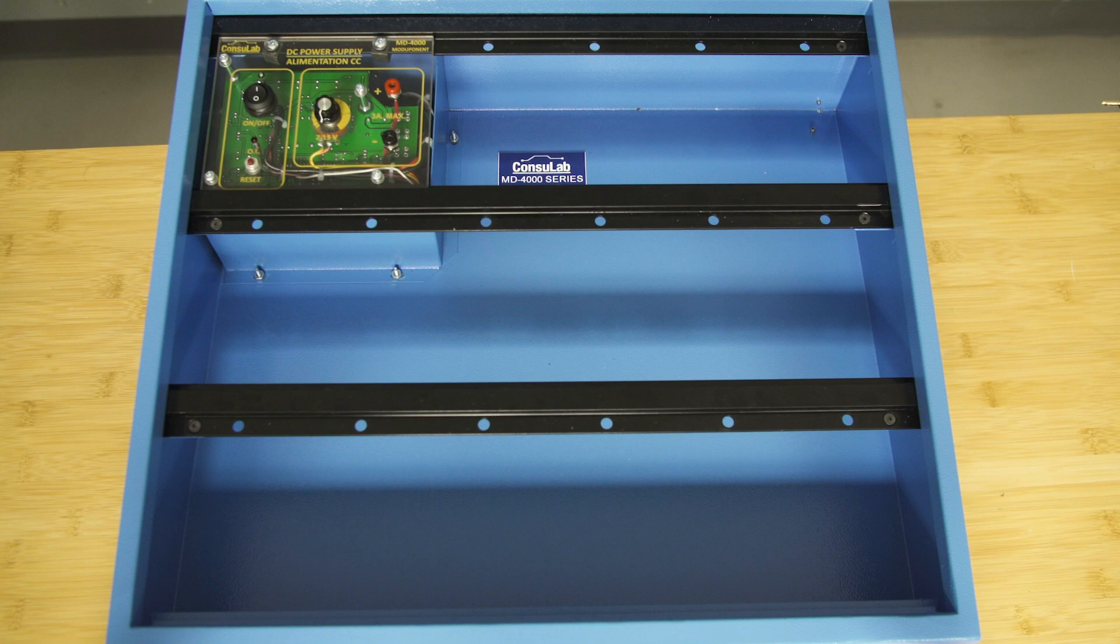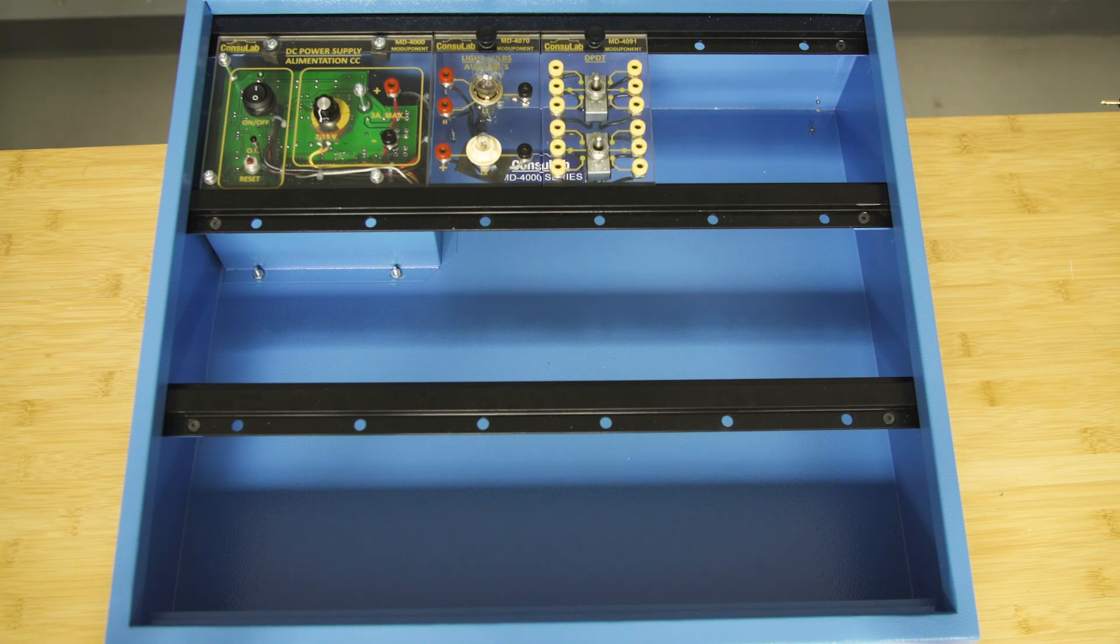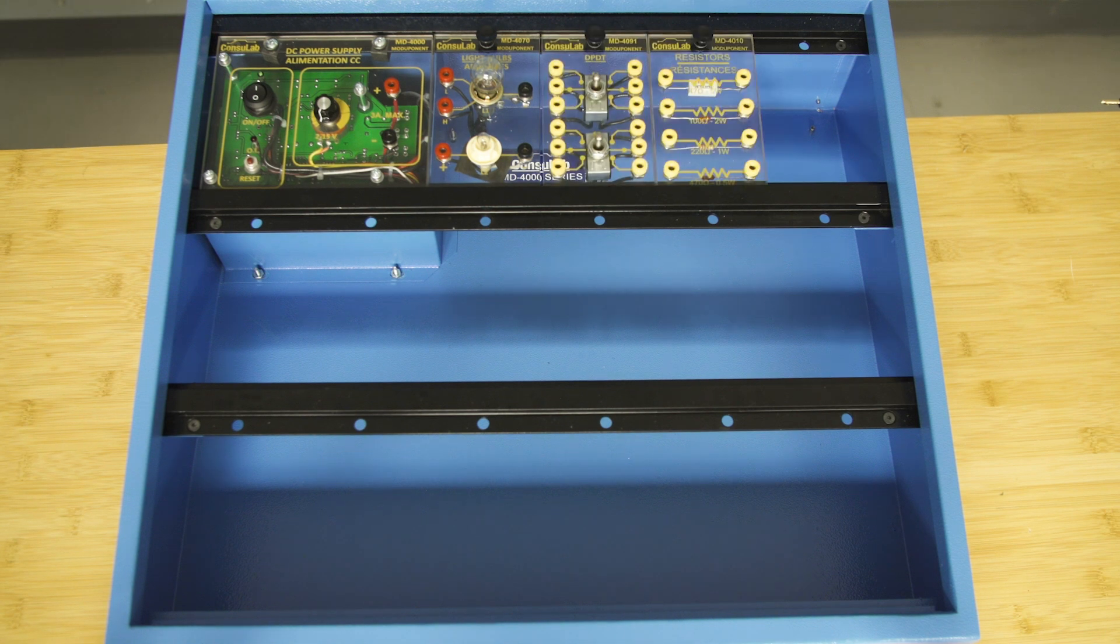We'll start with light bulbs. This light bulb module has both single and dual filament light bulbs, and these are easy to replace—they're light bulbs you'll already have in stock at your school. Next, we have double throw, double pole switches, followed by resistors with resistance and wattage values specifically chosen for the trainer to prevent any damage from occurring.